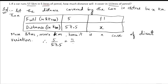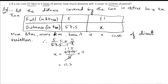Now we cross-multiply: x equals 57.5 multiplied by 11, divided by 5. Canceling 5 from 57.5 gives 11.5, so x equals 11.5 into 11.